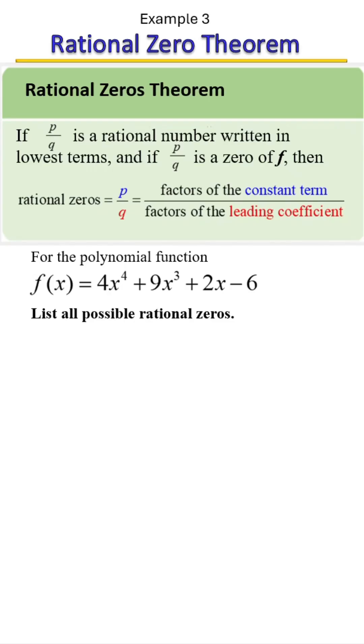Here we're going to list all possible rational zeros of this polynomial function. You should know that it does not matter if you're missing any degrees or terms. That does not apply when you're using the rational zero theorem. So let's continue.